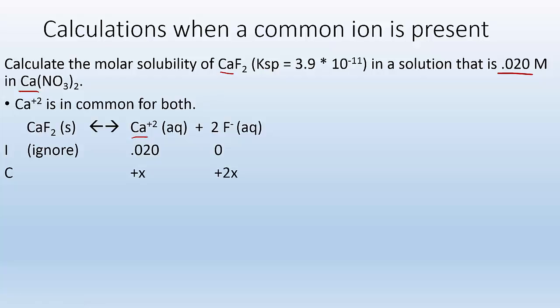I start with 0.02 calcium ion concentration from the problem and no fluoride ion. How much is it going to change? Well, I'm going to get plus x amount of calcium ion dissolving as well as plus 2x amount of fluoride ion because of the coefficient 2 in front. So our equilibrium concentrations are as follows: 0.02 plus x and 2x. So now we want to plug that into our Ksp expression.